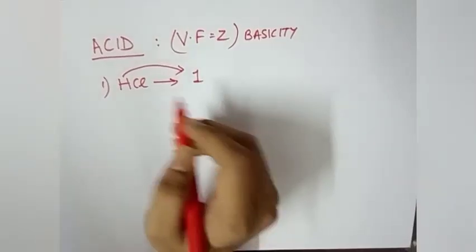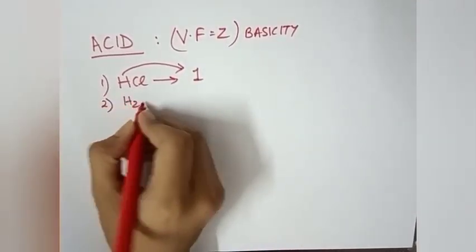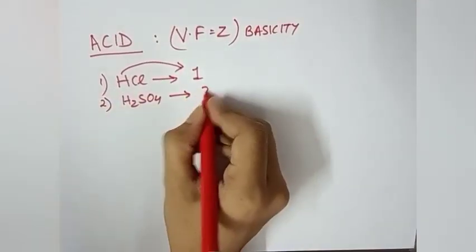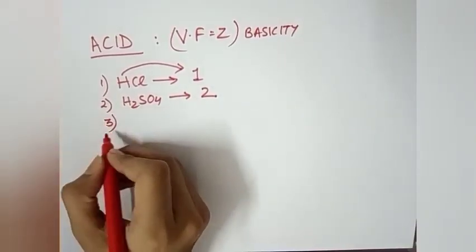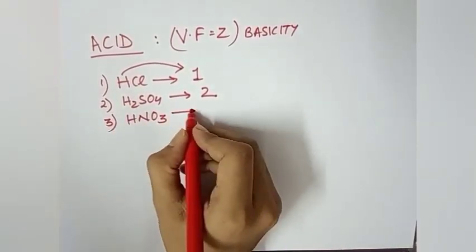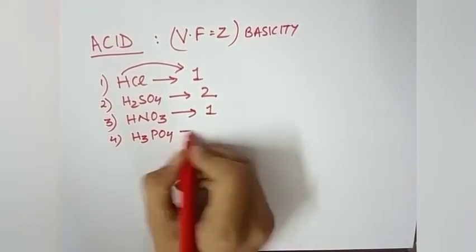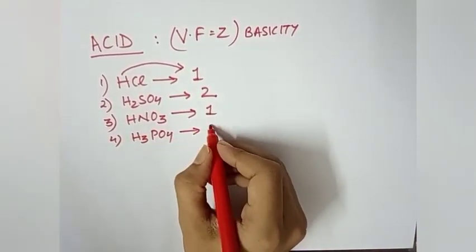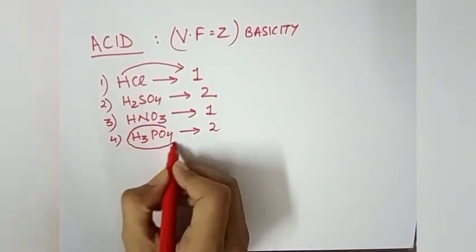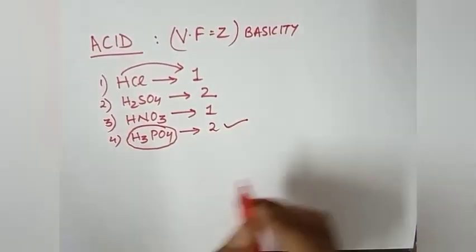HCl can donate one H+ ion, so its valence factor is one. Similarly for H2SO4 the valence factor will be two as it can donate two H+ ions. For HNO3 that is nitric acid the valence factor will be one. For H3PO4 the valence factor will be two because according to its molecular structure it can donate only two H+ ions.